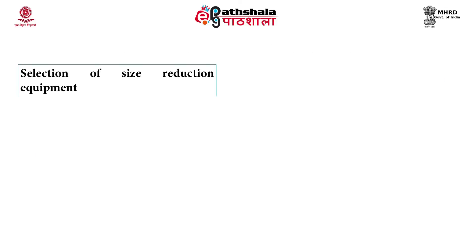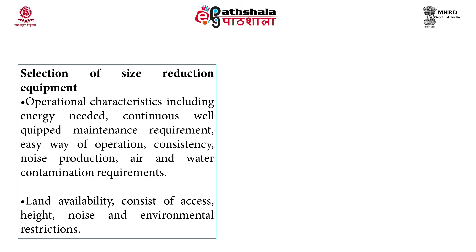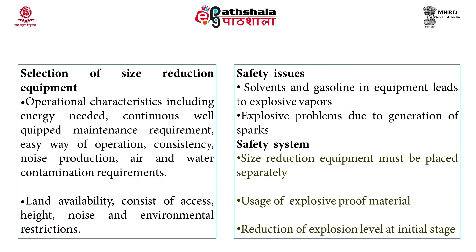When selecting a size reduction equipment, the criteria include: operational characteristics such as energy needed, continuity of operation, and maintenance requirements; ease of operation; consistency; noise production; air and water contamination requirements; land availability, height, noise, and other environmental restrictions. Safety is also very important — solvents and gasoline used in these equipments can lead to explosive vapours and generate sparks. Therefore, the size reduction equipment should always be placed separately and explosive-proof material should be used.